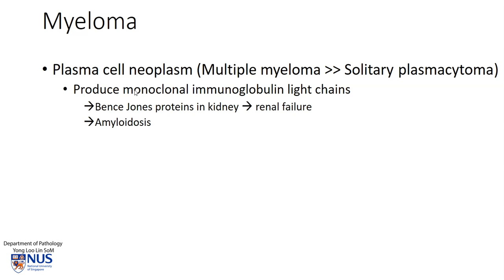These neoplastic plasma cells produce monoclonal immunoglobulin light chains, which can be detected in the blood and also excreted in the urine. In the urine, they form what is known as Bence-Jones proteins in the kidney, and this is actually quite toxic to the renal tubules.